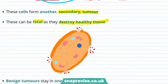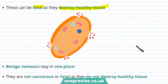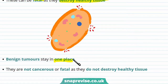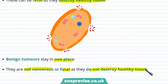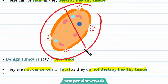Now let's talk about the other type of tumour: benign tumours. Benign tumours only stay in one place, and that means they're not cancerous or fatal. This is because they don't destroy any healthy tissue, so damage doesn't occur to the cells surrounding them.